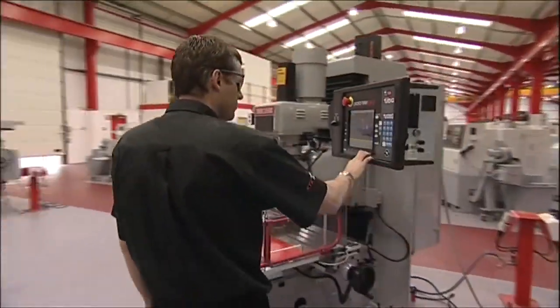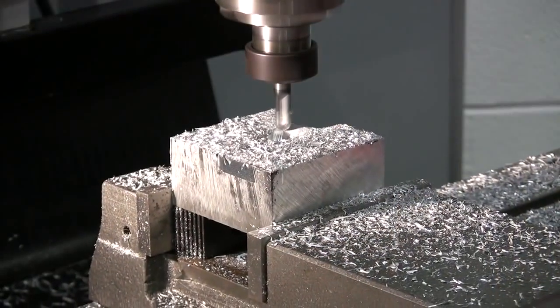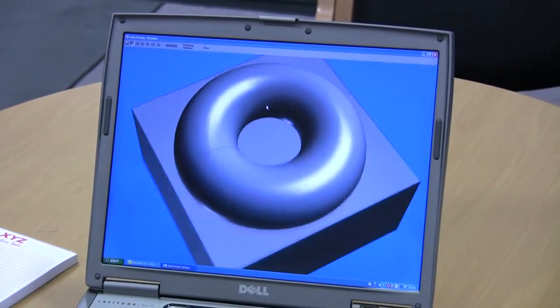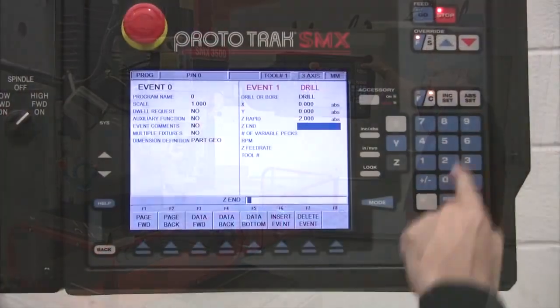The Prototrack SMX is such a control. The SMX makes light work of even the most complex 3D contours, and the biggest difference to the user is being asked the third-axis Z values.